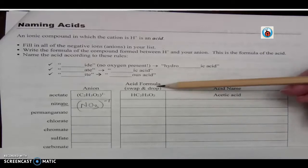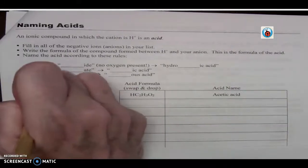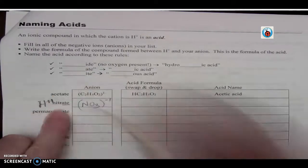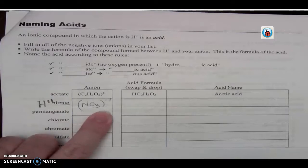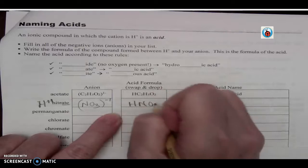The next one says formula. What am I going to do to write the formula? I'm going to swap and drop. Swap and drop with what? Well, all acids are going to start with hydrogen. So I've got positive one hydrogen, negative one nitrate. If I swap and drop, those cancel out, so I get HNO3.